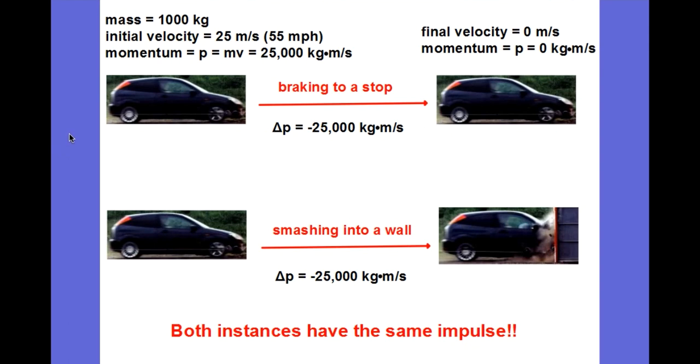So let's look at an example. Here is a car traveling at 55 miles per hour, or 25 meters per second. Its mass is 1,000 kilograms, and it puts on its brakes, and it comes to a stop. So its final velocity is zero, so its final momentum is zero. So its change in momentum, or its impulse, is the final momentum minus the initial momentum, a change of negative 25,000 kilogram meters per second.